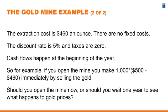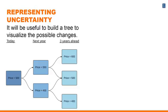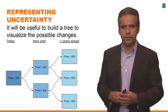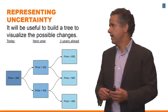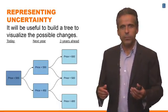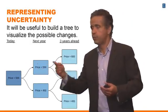For example, if you open the mine today you get the thousand ounces immediately and sell them in the market, collecting your profit right away. The question we're going to answer is: should you open the mine today, or should you wait one year to get more information on the price of gold? We'll do this by building a decision tree, just as we did with the R&D example.